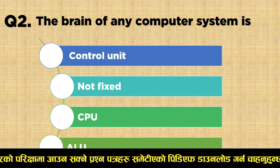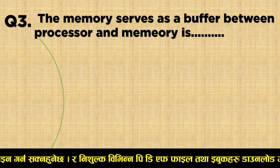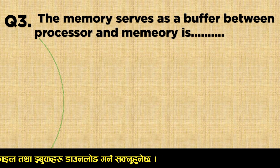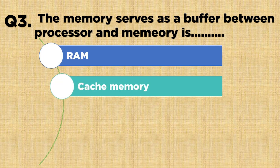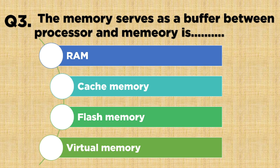Question number three: the memory that serves as a buffer between processor and memory is — Option A: RAM, Option B: Cache Memory, Option C: Flash Memory, Option D: Virtual Memory. The correct answer is Option B: Cache Memory.